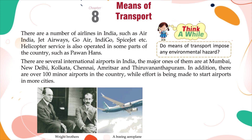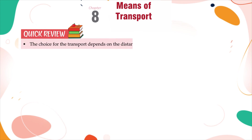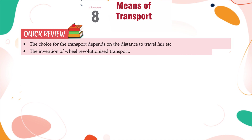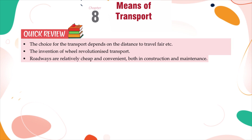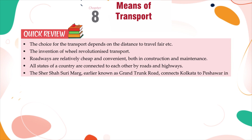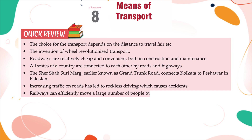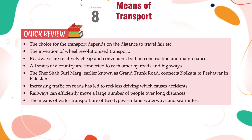Quick Review: The choice of transport depends on the distance to travel, fare, etc. The invention of the wheel revolutionized transport. Roadways are relatively cheap and convenient, both in construction and maintenance. All states of a country are connected to each other by roads and highways. The Sher Shah Suri Marg, earlier known as Grand Trunk Road, connects Kolkata to Peshawar in Pakistan. Increasing traffic on roads has led to reckless driving, which causes accidents. Railways can efficiently move a large number of people over long distances. The means of water transport are of two types: inland waterways and sea routes.